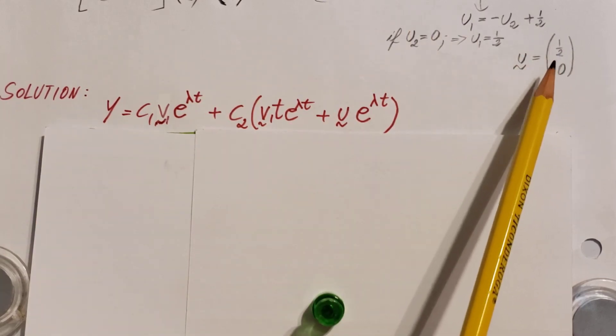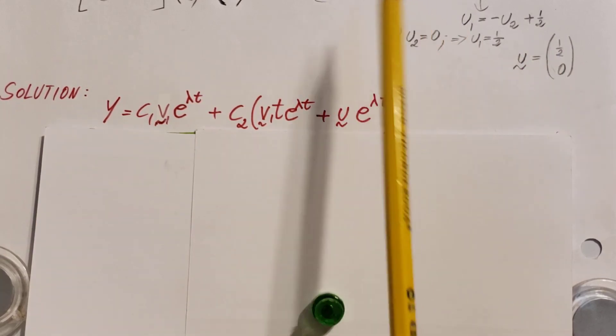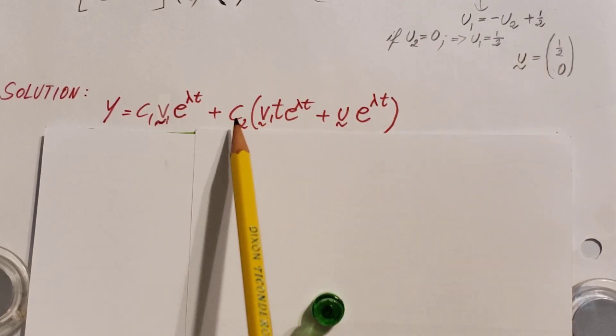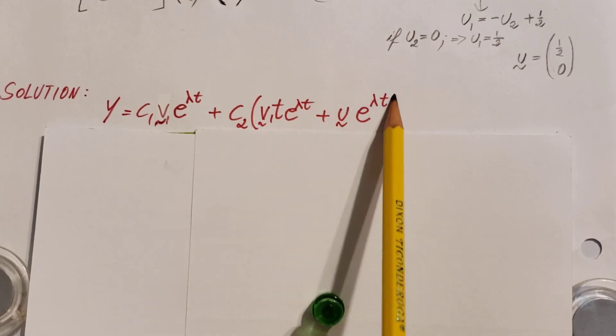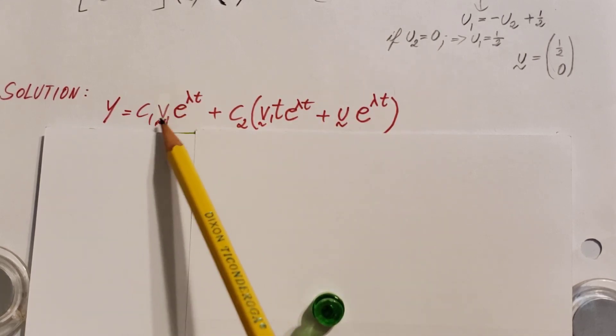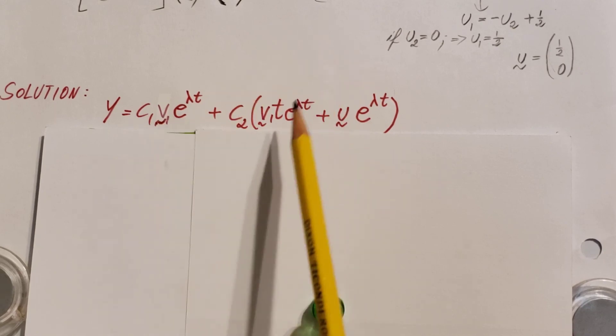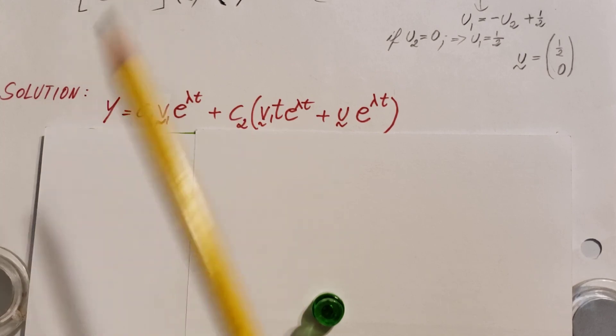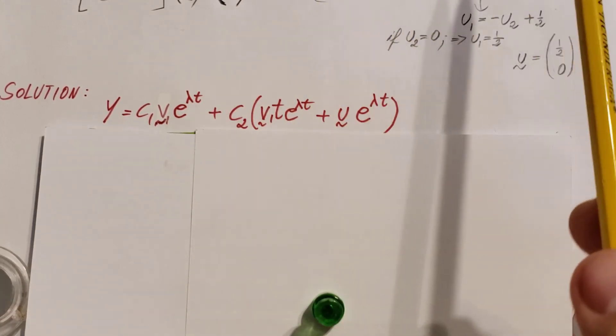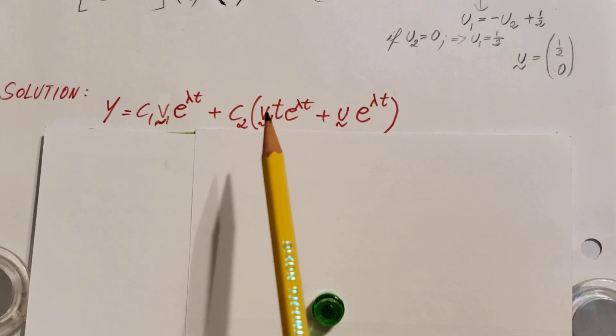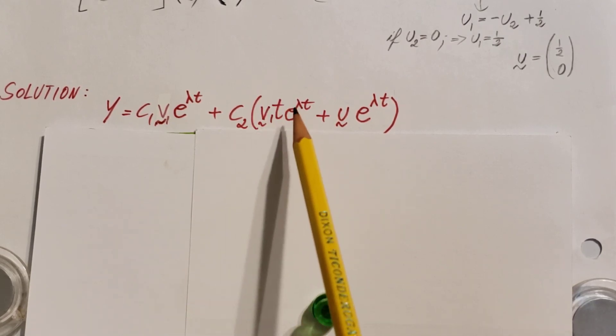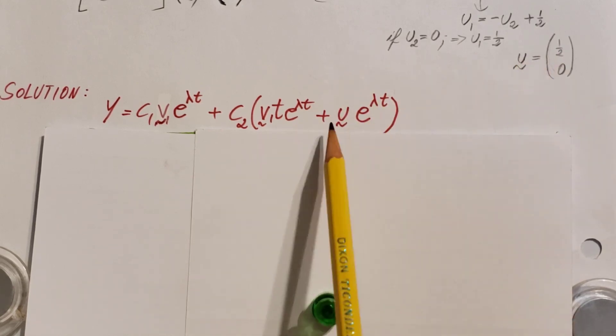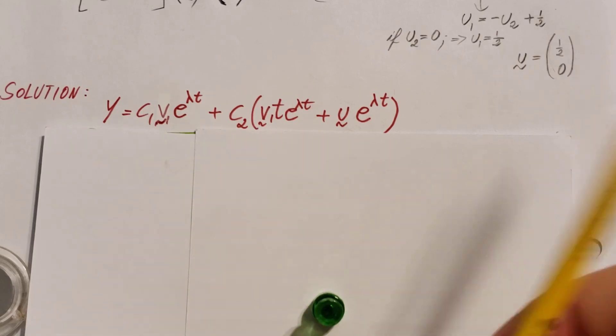Now for the second one, the one that we found with the help of u, I mean this one that we found, we're going to use with c2 times, right here, this parenthesis. It's not going to be just simply writing this again. It comes with a little bit of different setup. Make sure you pay attention and don't accidentally forget it. Here, we're going to have v1, the regular eigenvector that we have found, times t, e lambda t. And then plus u, what we found right here, e lambda t. So make sure you respect this.